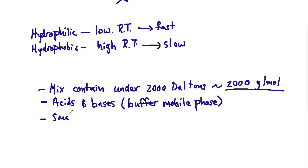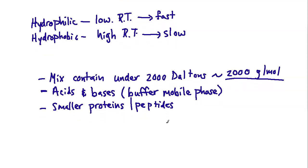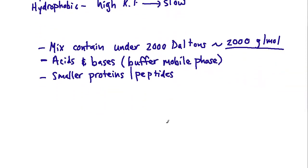Smaller proteins and peptides — again, under 2,000 grams per mole — are acceptable for separation using reverse phase. With amino acids, we have to consider that pH can affect the side chains and the forms in which protonatable or deprotonatable side chains exist. That can change their retention time, because when you're in an ionic form, you'll be far more polar, and that changes how the compound interacts with the column.